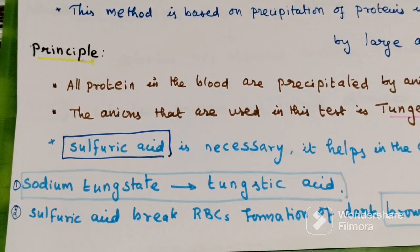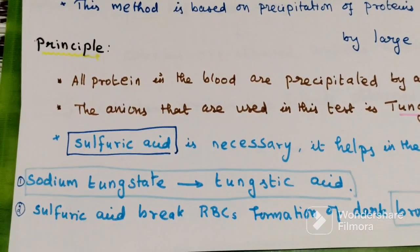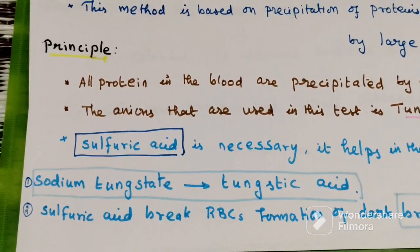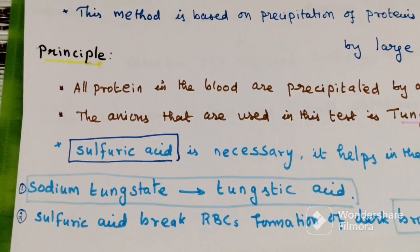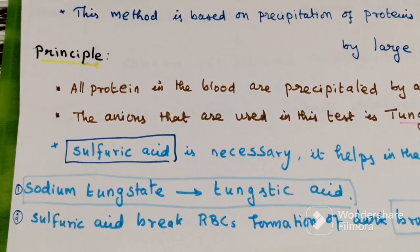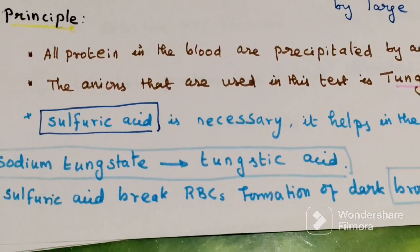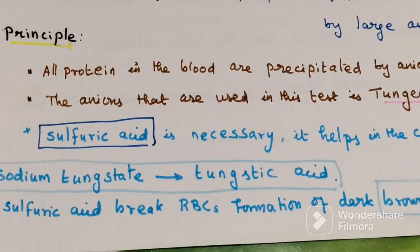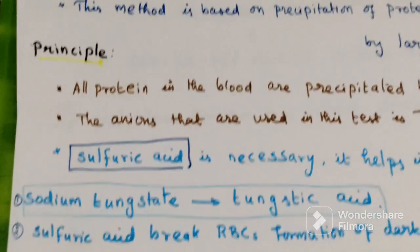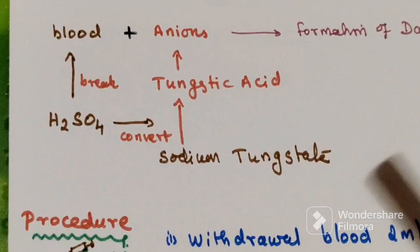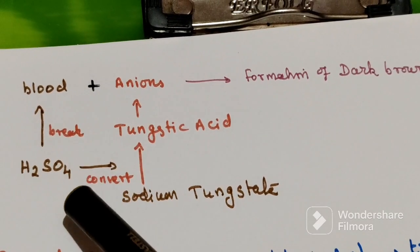Sulfuric acid is necessary for two main reasons. First, it helps in the conversion of sodium tungstate into tungstic acid, which is very important for this test. Second, sulfuric acid has the tendency to break RBCs, which helps in the formation of a dark brown color from dark red. These are the two main reasons sulfuric acid is an important element in this test.